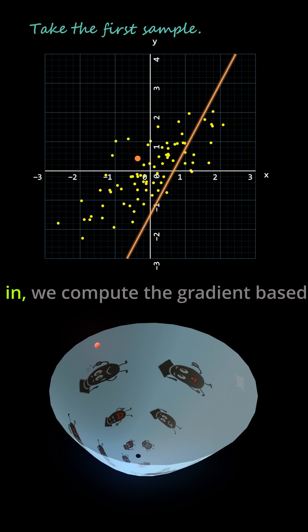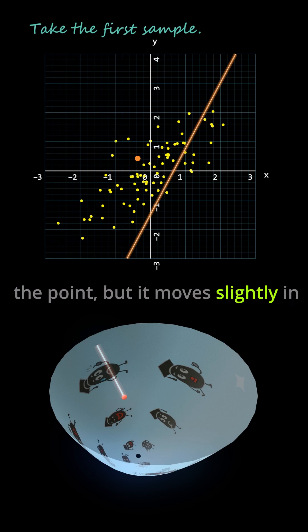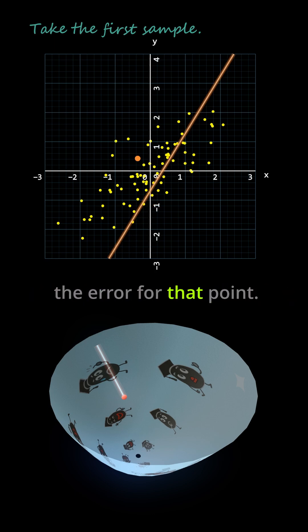Now, when the first data point comes in, we compute the gradient based only on that point, and we take one descent step, so the weights get updated. The line won't pass exactly through the point, but it moves slightly in the direction that reduces the error for that point.